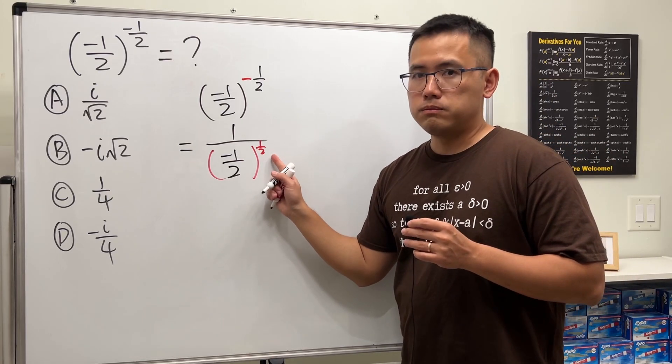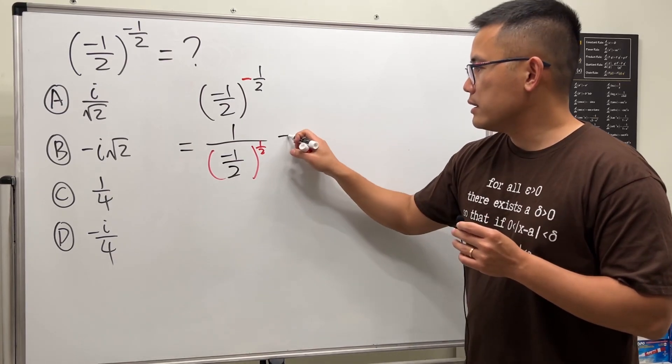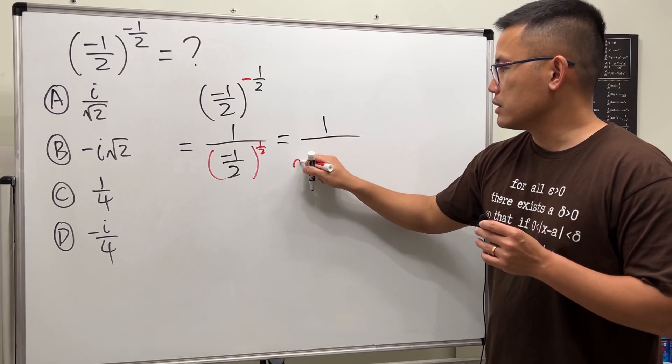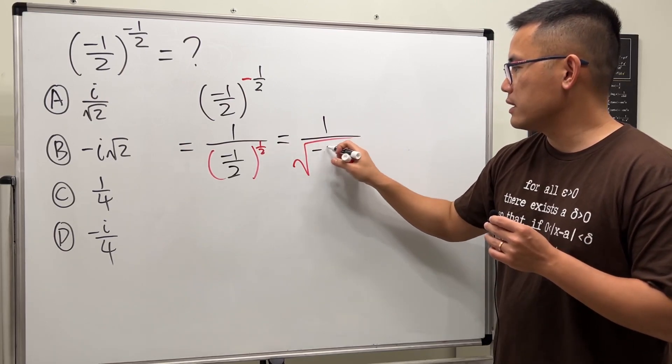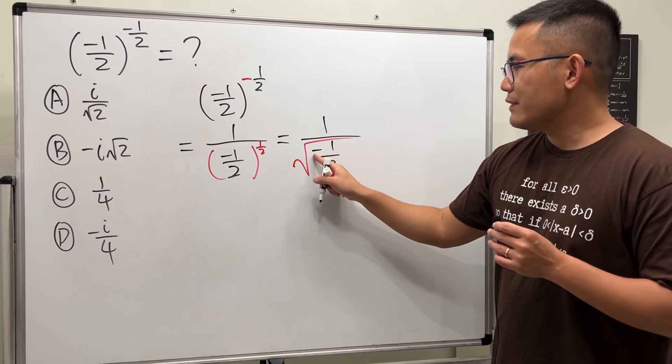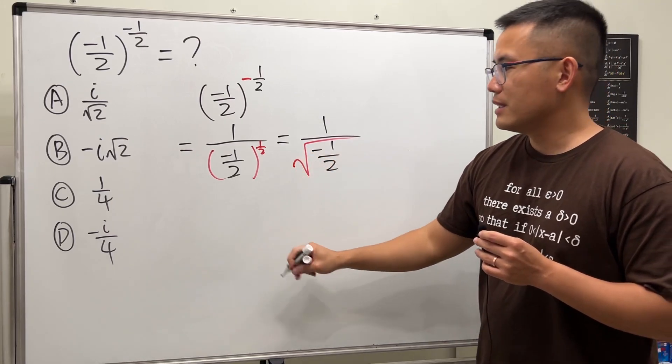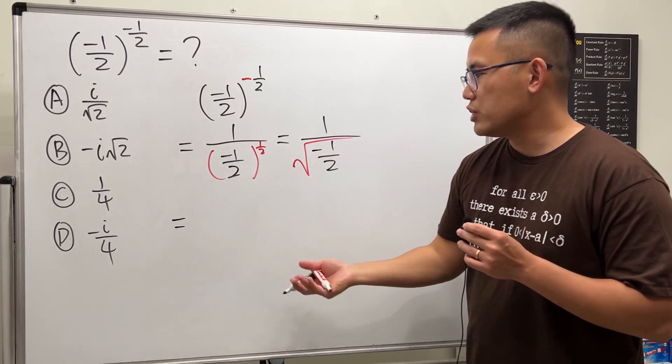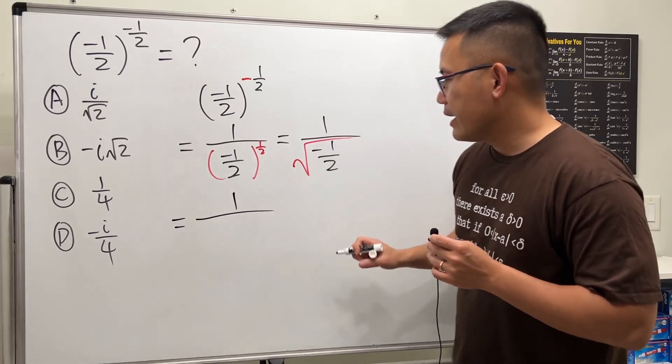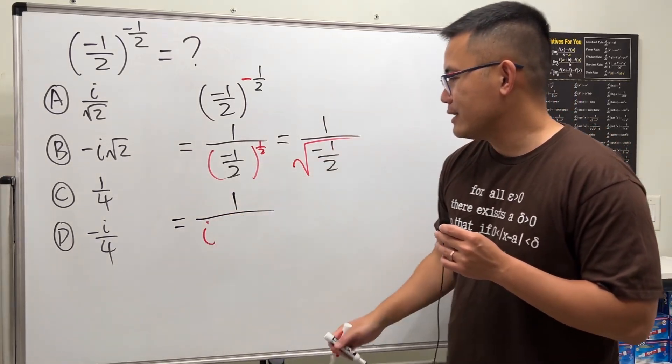Now to take care of this one-half power, we can write this as the square root. So this is just a square root and we have negative one-half. All right, we have a negative inside of the square root—well, that will give us the imaginary number i. Let's just put it outside.